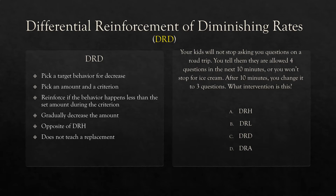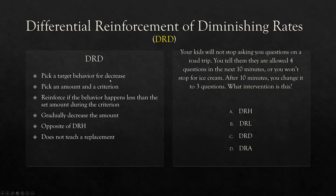DRD — differential reinforcement of diminishing rates. We're picking a target behavior for decrease. Let's say getting up out of your chair. We pick an amount and a criterion: five times out of your chair in an hour. When do we reinforce? If the behavior happens less than the set amount — less than five times in the hour, reinforce. Then gradually decrease the amount — lower and lower. It's basically the opposite of DRH. DRD also does not teach a replacement.